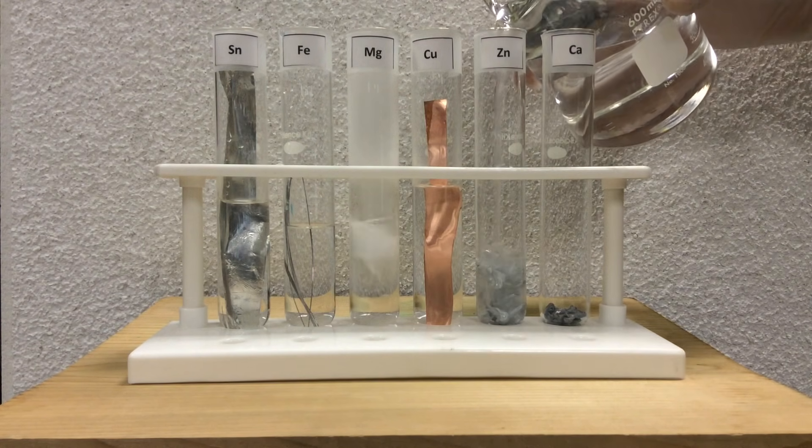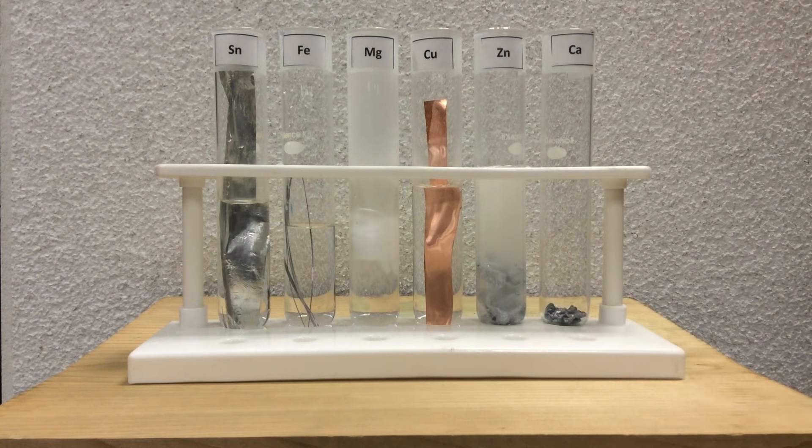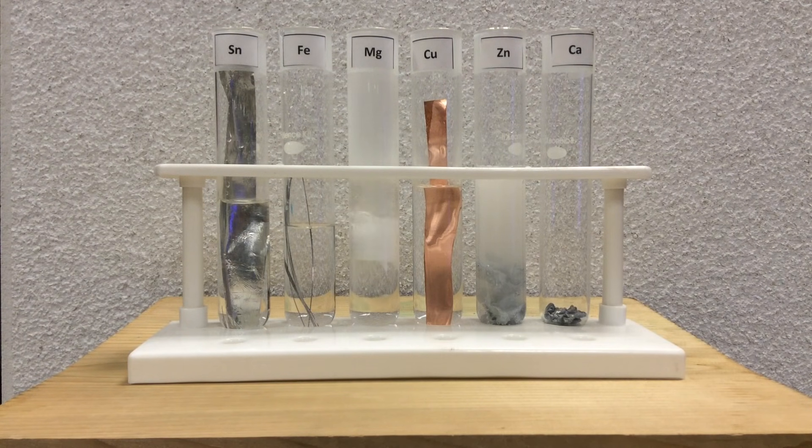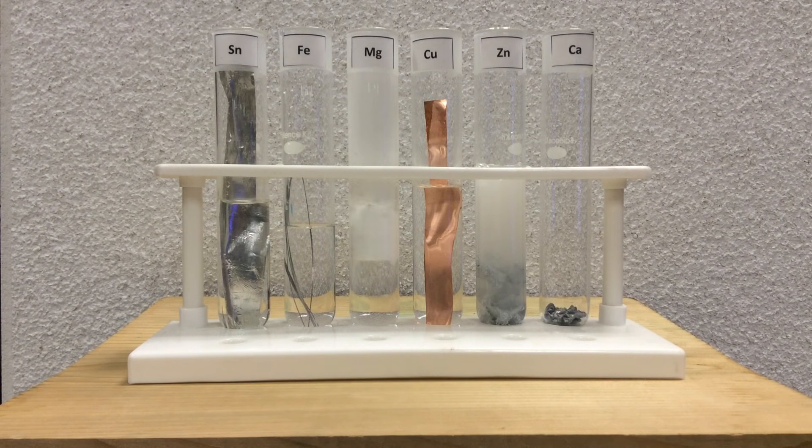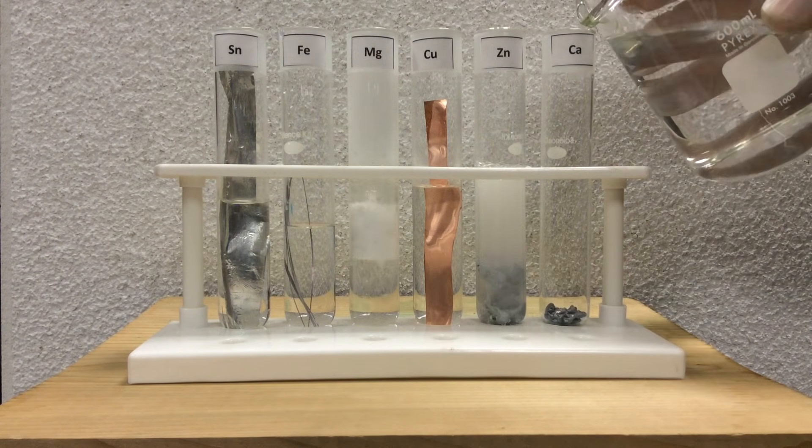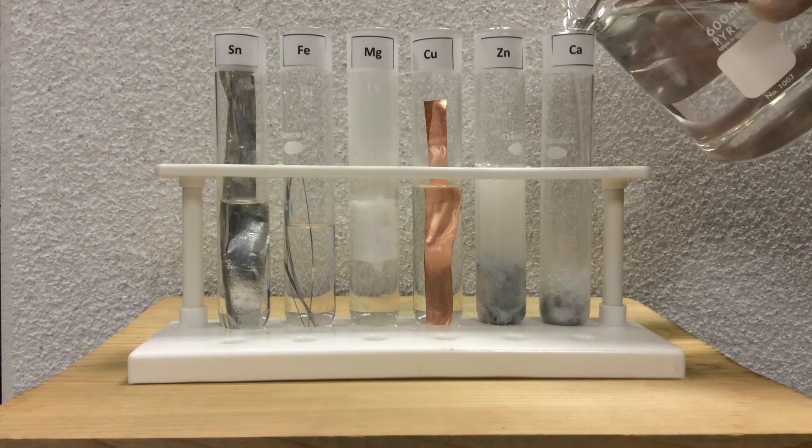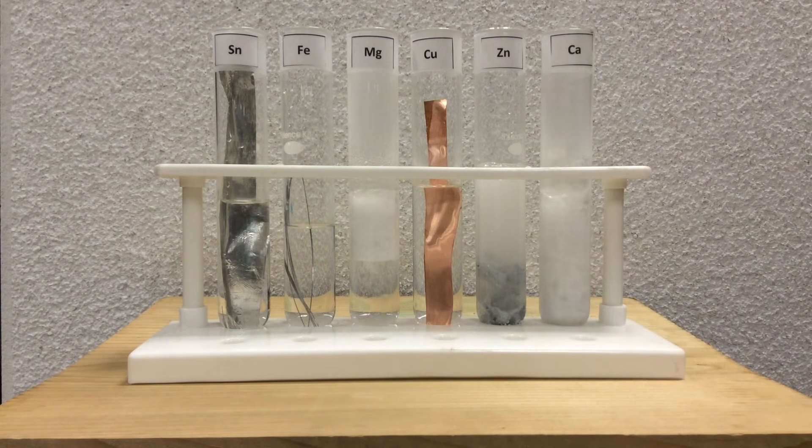And zinc as we add some hydrochloric acid. You can see some vigorous bubbles here. So the protons in the solution are being reduced by the metal who's giving it electrons. And now we can see calcium with the hydrochloric acid. The most vigorous of all.